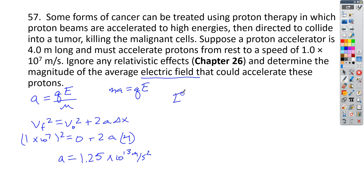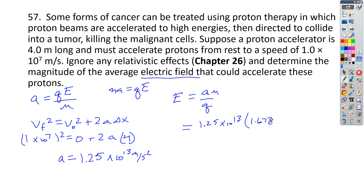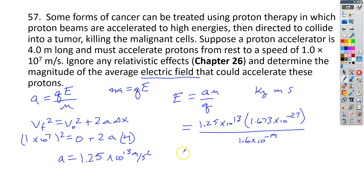Going back to the acceleration equation, we solve for E: E equals acceleration times mass all over charge. Our acceleration is 1.25 times 10 to the 13th, the mass is 1.673 times 10 to the negative 27th kilograms, and the charge is 1.6 times 10 to the negative 19th coulombs. With standard units throughout, we end up with 1.3 times 10 to the 5th newtons per coulomb for the electric field.